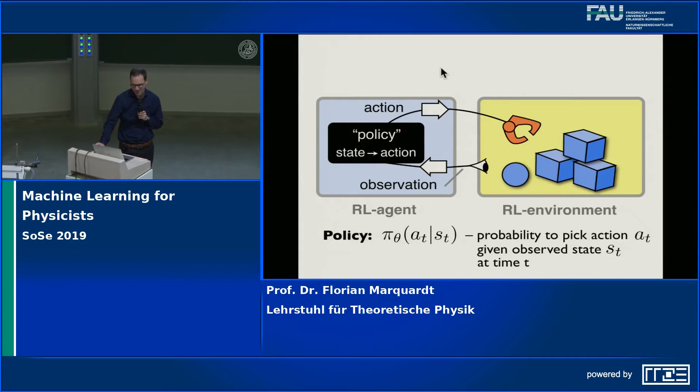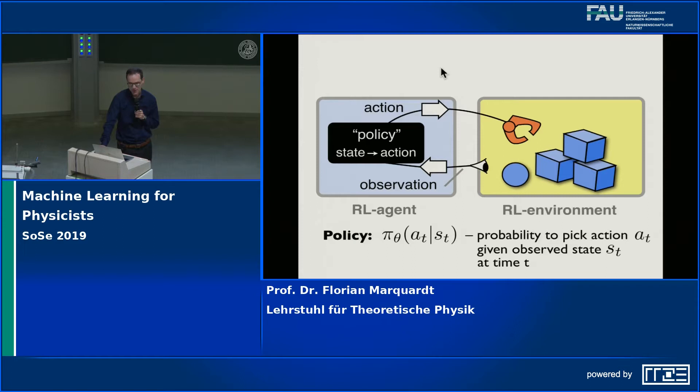The idea in reinforcement learning is that you are not told what is the correct answer or what is the correct strategy. Instead, the neural network explores many different strategies and the only thing it gets as feedback is some kind of reward that tells it whether the strategy was more or less successful. That is very good because then you can start actually solving new problems, problems that you haven't solved before — you don't know the good strategies, you're only able to tell what is a good solution versus a bad solution.